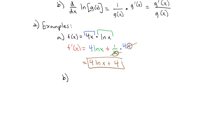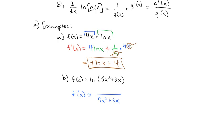Now let's look at the second formula — the natural log of a function. Let's say f of x equals the natural log of 5x squared plus 3x. The derivative of natural log is 1 over the stuff, so we get 1 over 5x squared plus 3x, and then multiply in the numerator by the derivative of that stuff, which is 10x plus 3. That becomes our derivative using the chain rule with the natural log formula.